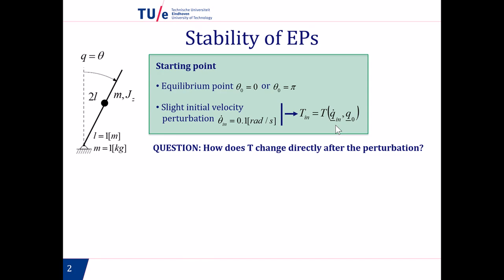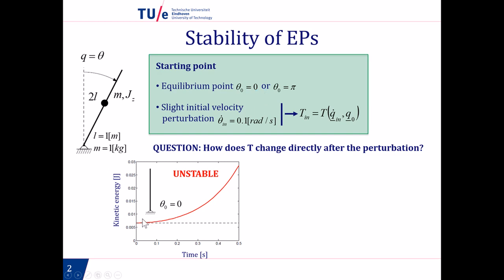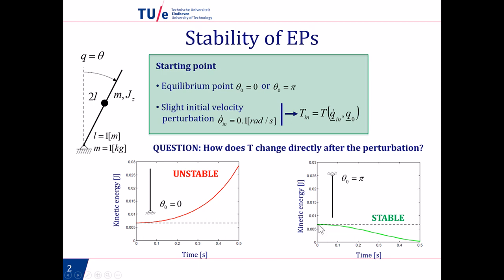If we take the first equilibrium position, theta equals zero, we see that after we give this initial kinetic energy perturbation, the kinetic energy will continue to increase over time. This is an unstable position — we can test that ourselves: if we try to put a pendulum up, it will fall. If we consider the other equilibrium position with theta equals pi, meaning the pendulum is down, then when we give this initial kinetic energy, the kinetic energy will tend to decrease. This is a stable equilibrium position.